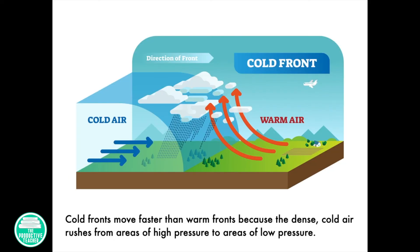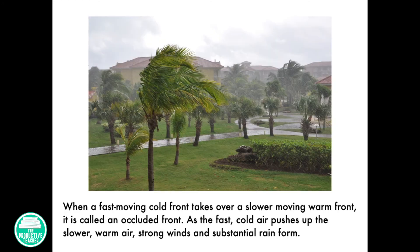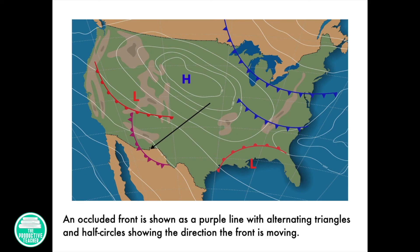Cold fronts move faster than warm fronts because the dense cold air rushes from areas of high pressure to areas of low pressure. When a fast moving cold front takes over a slower moving warm front, it is called an occluded front. As the fast cold air pushes up the slower warm air, strong winds and substantial rain form. An occluded front is shown as a purple line with alternating triangles and half circles showing the direction the front is moving.